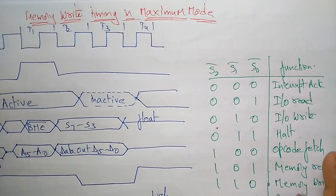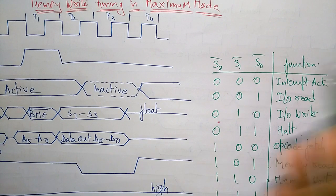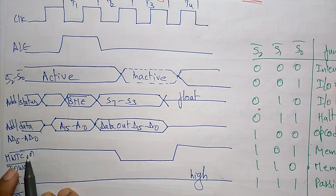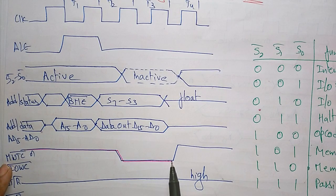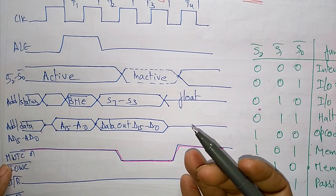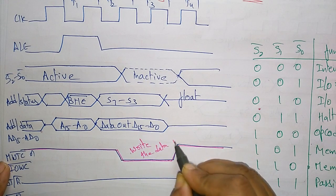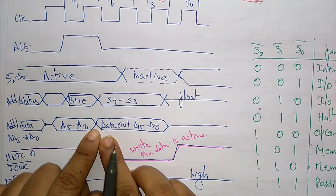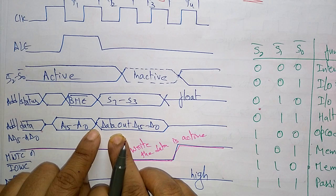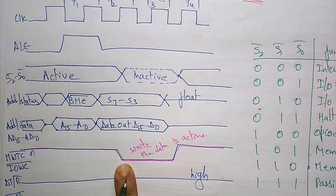Now let us see the memory write cycle — the memory write timing diagram in maximum mode. This is just the same as the read timing, but the only difference is instead of read, we are putting write. The write signal will be active during T3 — the last two clock pulses. First the address will be placed on the address bus, and next the valid data out will be placed on D0 to D15.